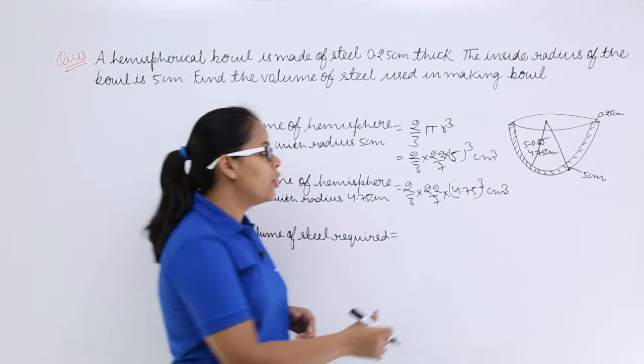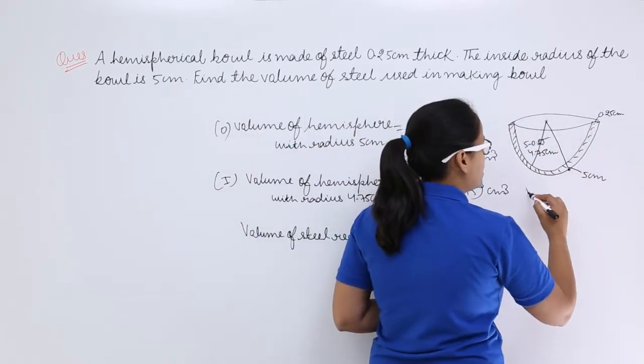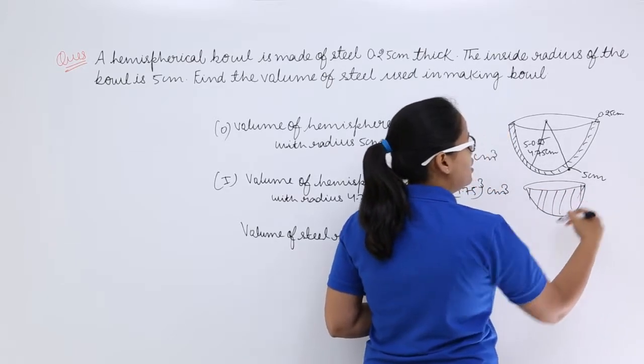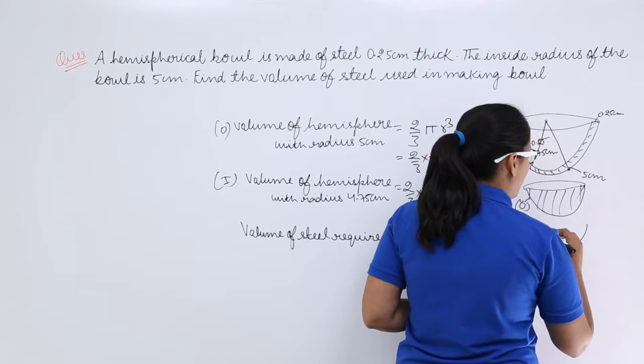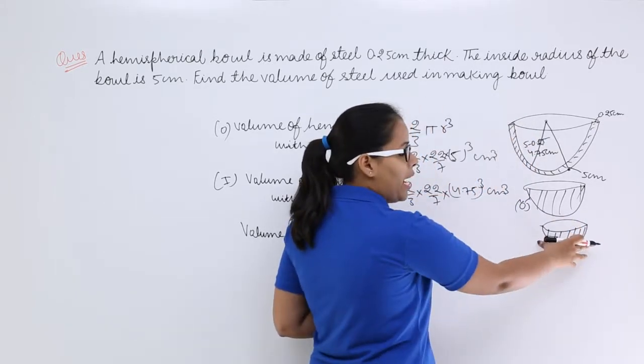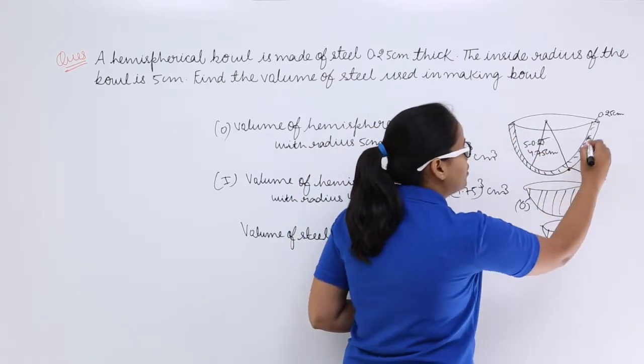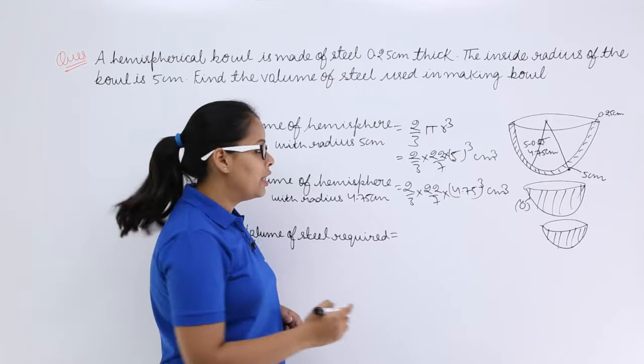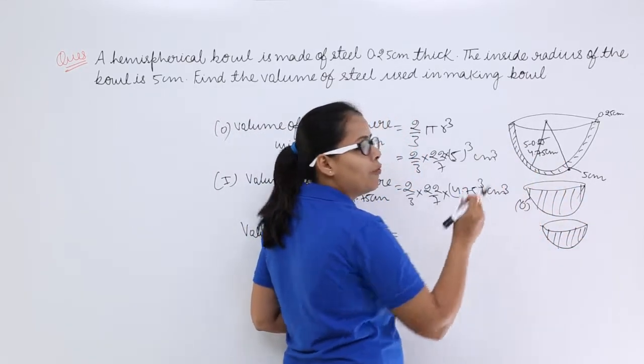You must be wondering why. What we have done here is calculated the volume of the whole outside hemisphere and also calculated the volume of the inside hemisphere. When you subtract this part from this part, you will be left with only the part which is the steel. That's why I have subtracted this volume from that volume to get the volume of only steel.